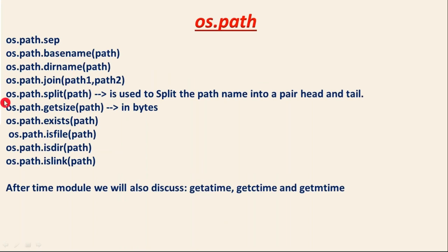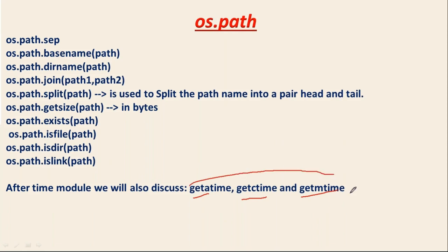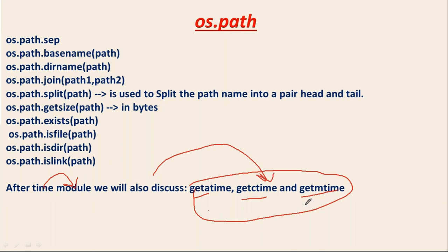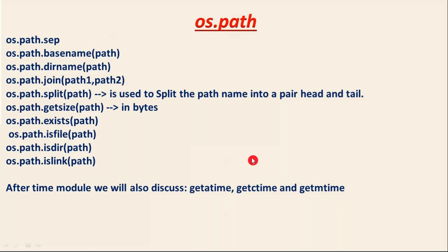These are some of the operations from os.path which are very helpful in real time. Along with that, you also need access time, creation time, and modify time. These times you can get from os.path.getatime and related functions, but to understand them you should be familiar with Python's time module. After discussing the time module, we'll come back to os.path and explain those operations. Thank you for watching this video.